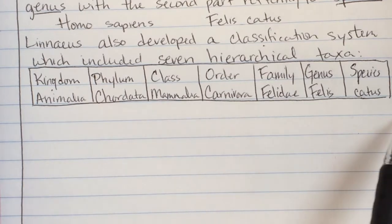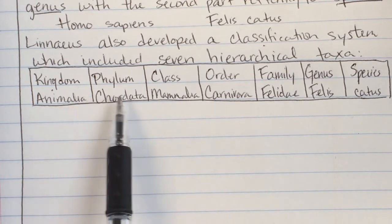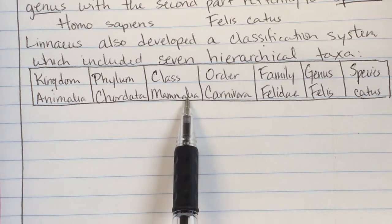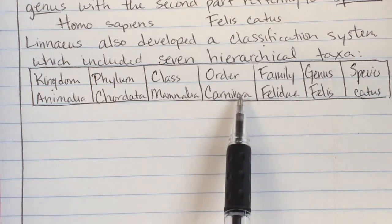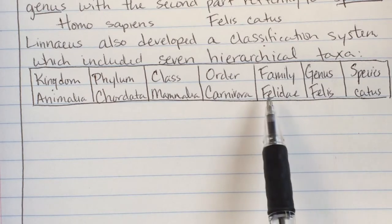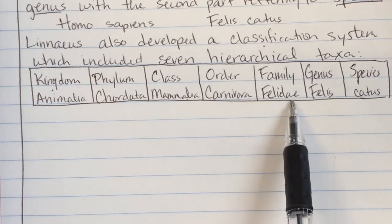And so this is the long name for a cat. So they are animals. Chordata means they have a spinal cord. They are mammals, which means they produce milk for their young. Carnivores, they eat meat. And then we have Felidae, Felis, Catus. And so that's kind of taking us into the big cat family.